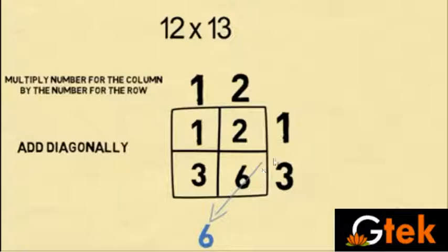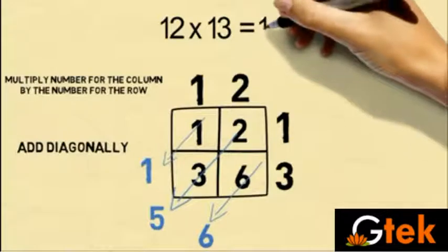So now I am going to add diagonally. So this is 6. So as I mentioned, so this is 5. 2 plus 3 is 5. This is 1. So it is 156.